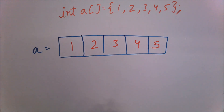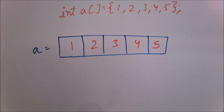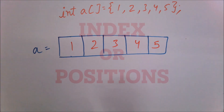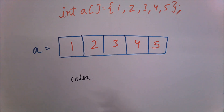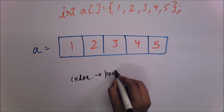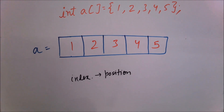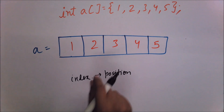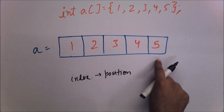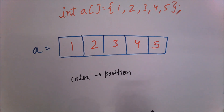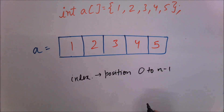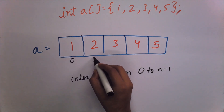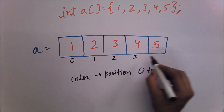Now how will we differentiate between these values — between 1, 2, 3, 4, 5? For this we must understand the concept of index. What is an index? Basically, index is nothing but the position of those elements. We can say this is the first position, second position, third position, fourth and fifth position. But in computers, the positions start from 0 to n minus 1.